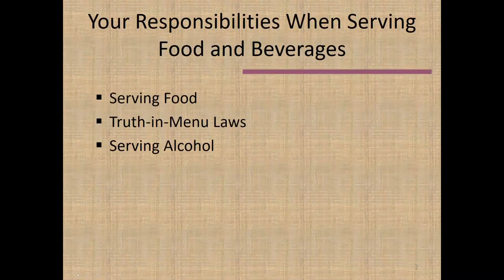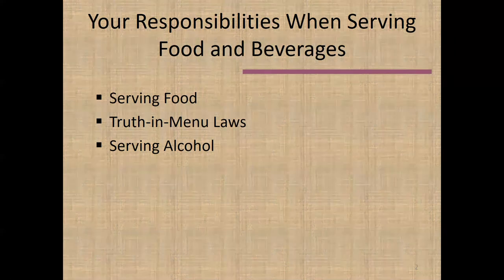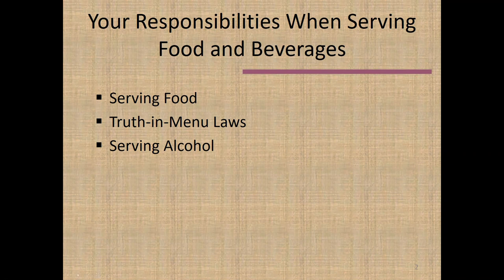This chapter is divided into three sections. We'll talk about serving food safely, then about menus — what needs to be on the menu and what shouldn't be. Finally, we'll discuss probably the most important area of liability that a restaurant or bar experiences, which relates to alcohol and how we can serve alcohol wisely and safely.